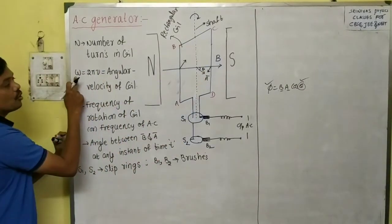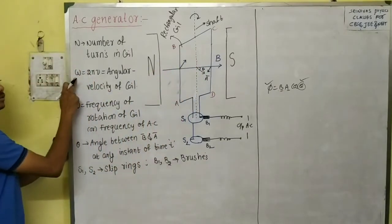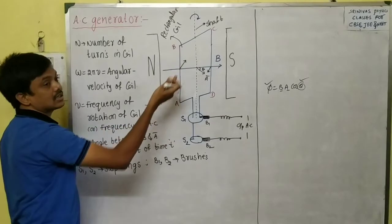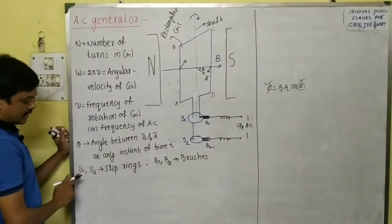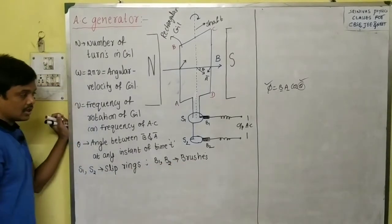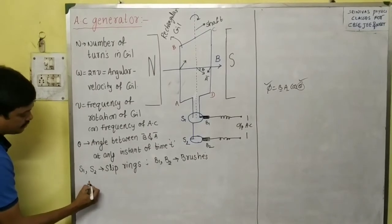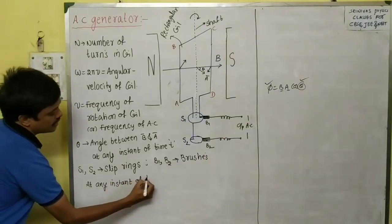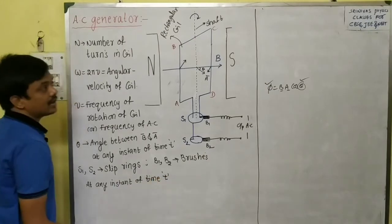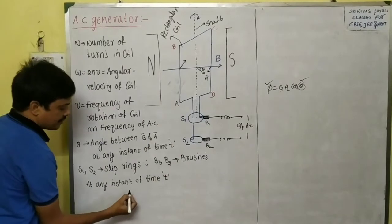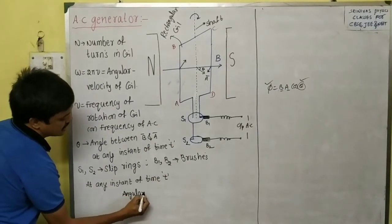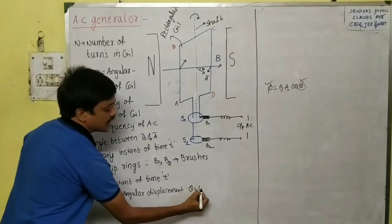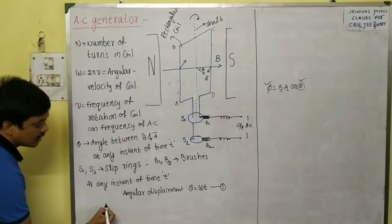Let us define the terms: N is the number of turns in the rectangular coil, ω is the angular velocity with which it is rotating, ν is the frequency of rotation of the coil (how many rotations per second), and θ is the angle between B and A at any instant of time. S1 and S2 are the slip rings; B1 and B2 are the brushes. At any instant of time t, the angular displacement θ equals angular velocity times time: θ = ωt. This is equation one.